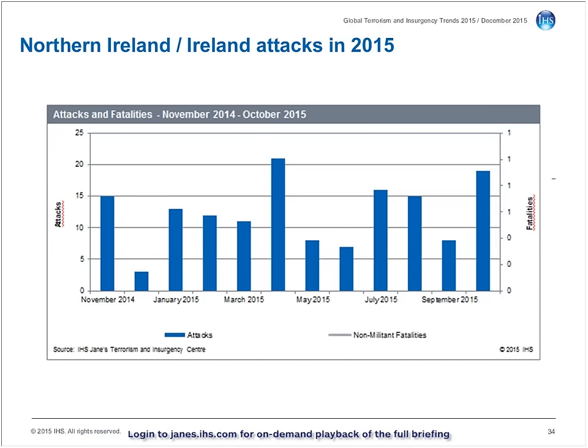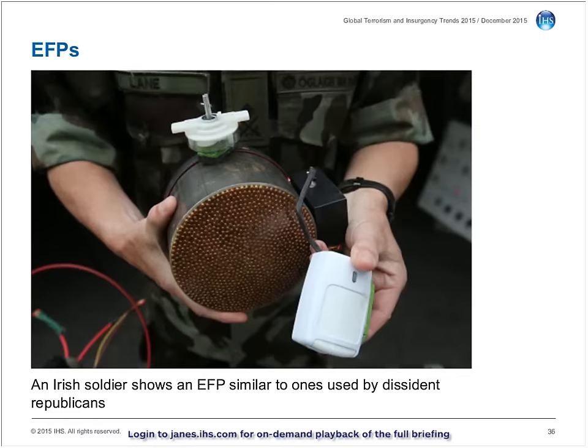JTIC recorded a total of 148 attacks conducted by non-state armed groups in Northern Ireland and the Republic between the 1st of November 2014 and the 31st of October 2015, making an average of 0.41 attacks per day, compared to an average of 0.48 attacks recorded in the preceding 12 months. This suggests a relatively consistent operational tempo in these areas. Whilst information on the makeup of these devices is relatively scarce in open sources, the information available suggests that the devices are often made up of legacy stocks of Semtex or homemade explosives.